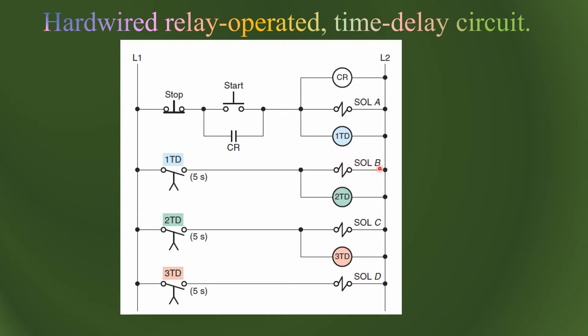After five seconds when this is closed, solenoid B will become on and also timer 2. After five seconds, the third solenoid C will become activated and the third timer will become on, and then the fourth timer. Each of the solenoids A, B, C, and D will be activated after five seconds of the previous. Now we want to do this automation using the PLC.